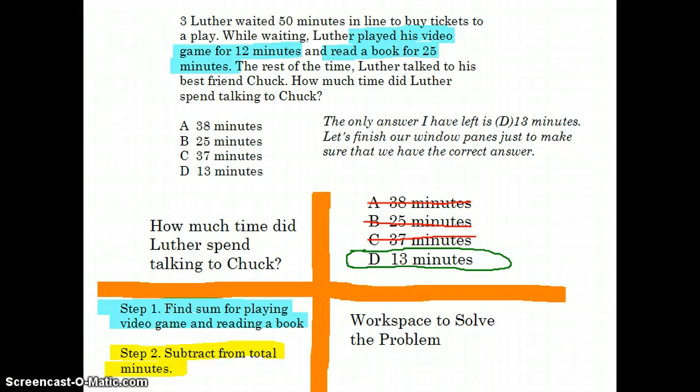The strategy we're going to use to solve the problem is step one, we're going to find the sum for Luther playing the video game and reading a book. Then step two, we're going to subtract that amount from the total minutes.